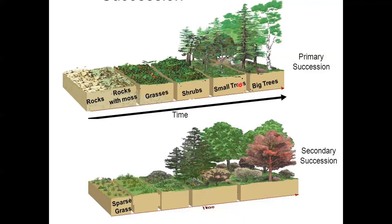Primary succession starts with bare rock and takes a lot more time to get to the climax community. Secondary succession starts with dirt and a small number of plants, and takes much less time to get to the climax community.